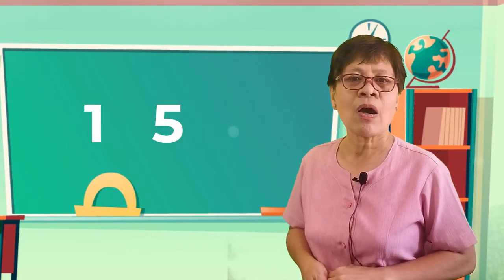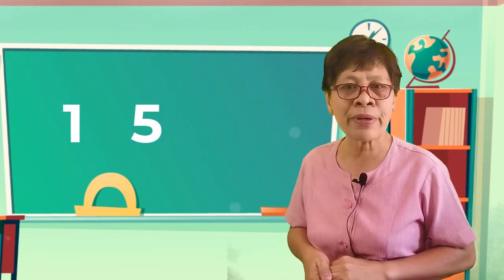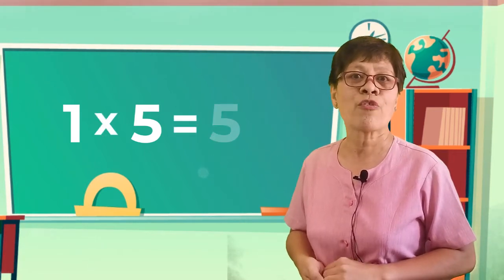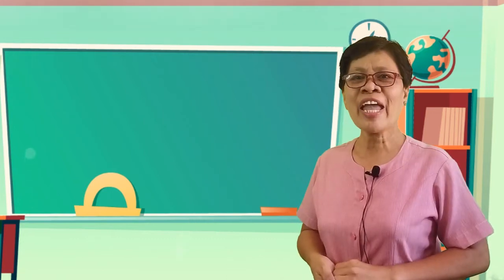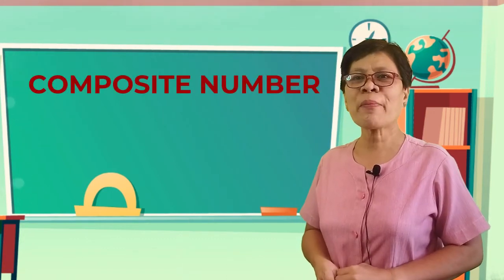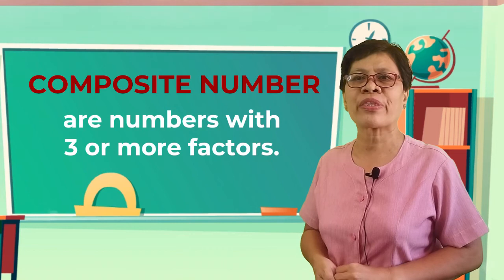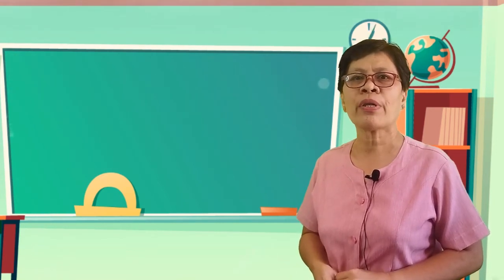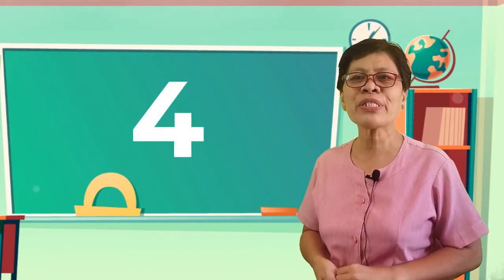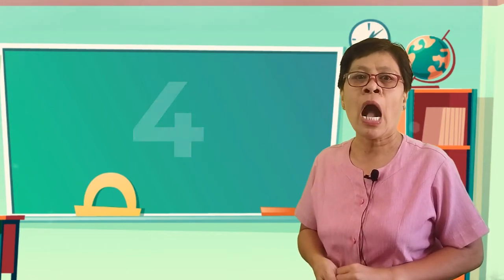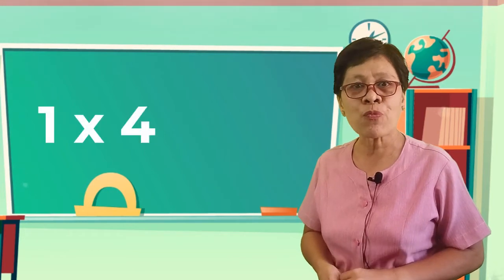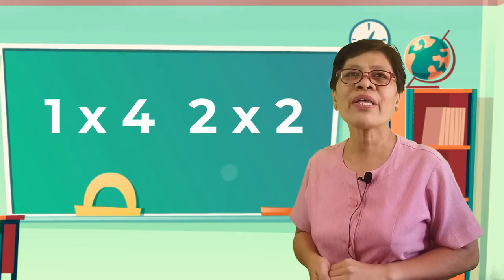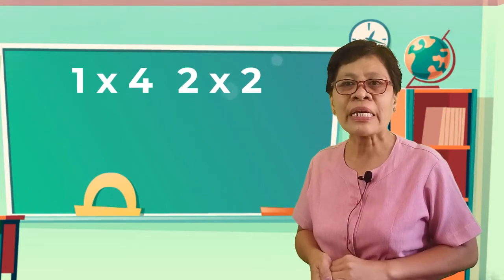On the other hand, composite numbers are numbers with three or more factors. We say, for example, number four. The factors of number four are one times four and two times two. Then, we arrange the factors in increasing order.